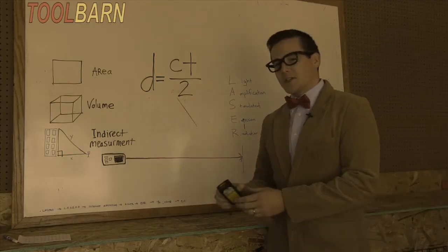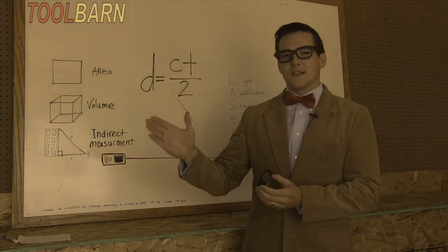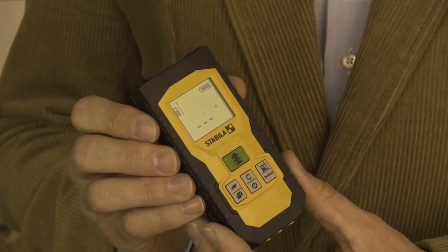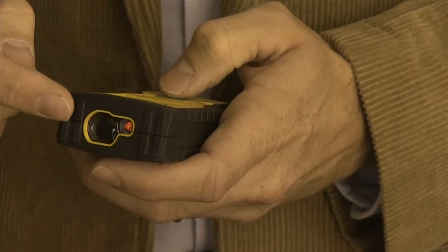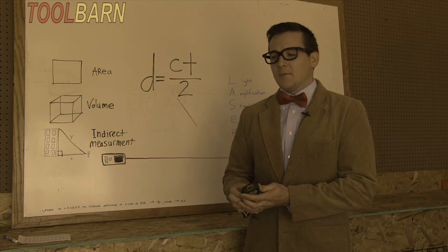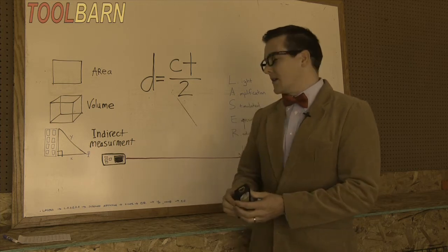Most of the time on construction jobs or remodeling jobs, we need to know the distance of something. A tool like this comes in very handy. It actually uses lasers to shoot a laser out, and it comes back to this iris here and measures the distance from an object, much like the way sonar works but using lasers.